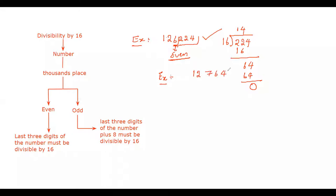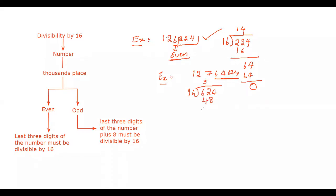Let me take one more example. The next number is 12764. The last 3 digits of the number are 624. Since the 1000s place digit is even, the last 3 digits must be divisible by 16. So we check 624 divided by 16.